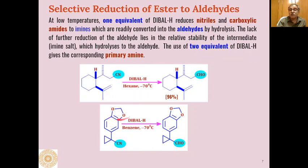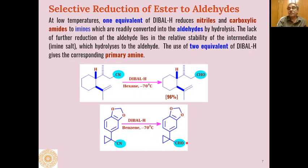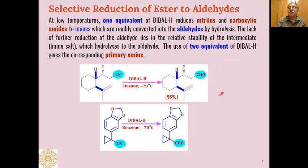The ether moiety is not affected, and DIBAL-H acts as a selective reducing agent only for nitriles, converting them to aldehydes. If we use two equivalents of DIBAL-H instead of one equivalent, the products formed are the corresponding amines rather than aldehydes — on similar lines to what we get with lithium aluminum hydride.